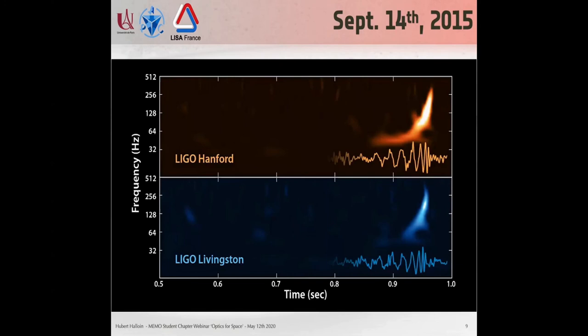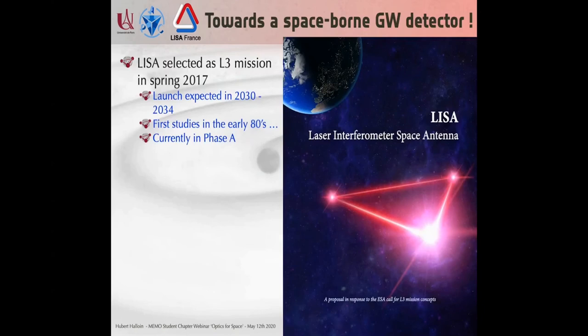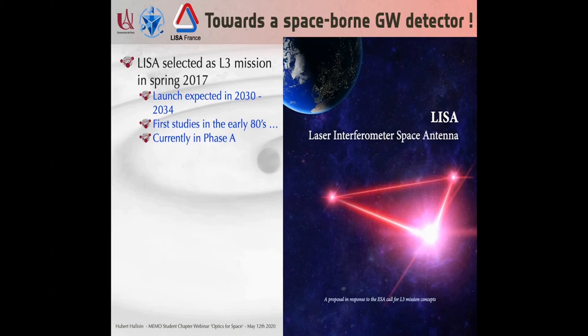Gravitational wave astronomy began basically five years ago. Now we are preparing for detecting gravitational waves from space. LISA has been selected as a large mission by ESA in 2017 and is expected to be launched in 2034. The first studies for a space-borne detector were conducted in the early 1980s — with papers from as early as 1978. LISA is now on track, supported by space agencies for a 2034 launch. We are currently in Phase A — the preliminary definition study phase.